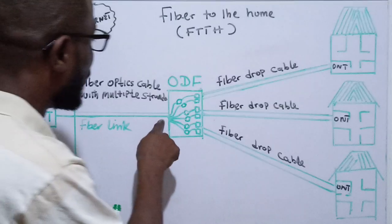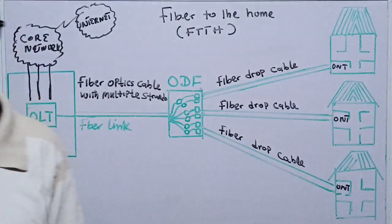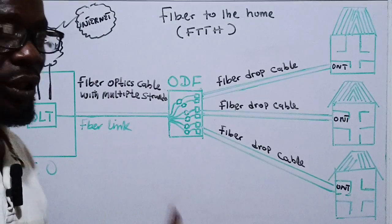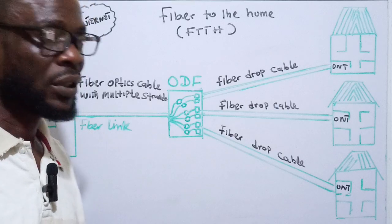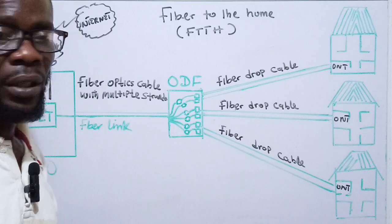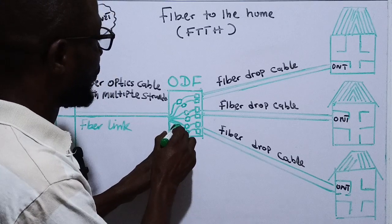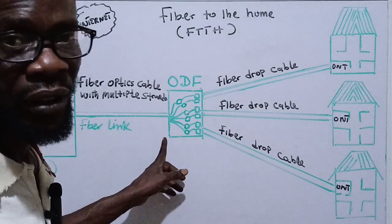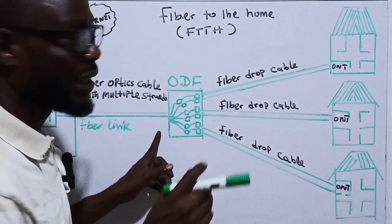The fiber runs from the central office to the street. In an estate or street you'll often see white frames — those are called Optical Distribution Frames, ODF. When the cable enters the ODF, you'll see fiber connectors, fiber trees, in transmit and receive pairs.